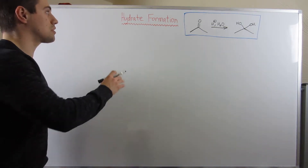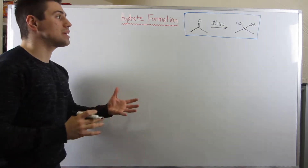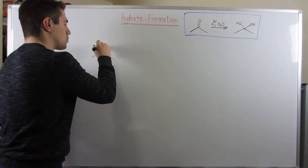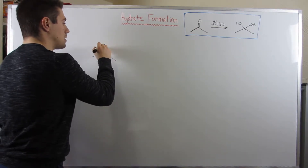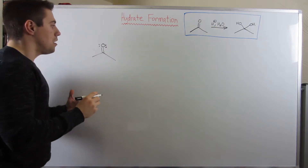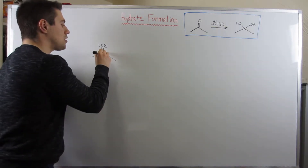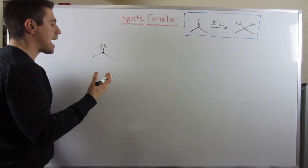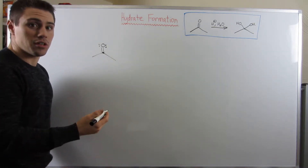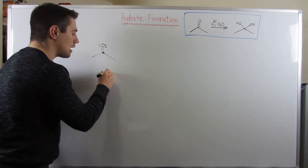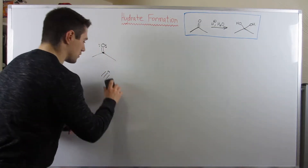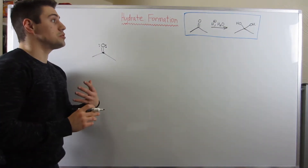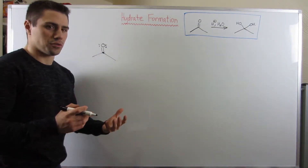So the first one we're going to talk about is called hydrate formation. Before we get into it, I want to highlight a few key things. In every single mechanism in this worksheet, we're going to do one thing and you're going to get so sick of doing it. If you look at our carbonyl carbon — I'm just drawing a 3-carbon ketone — we're used to attacking this carbonyl with things like Grignard nucleophiles or alkyne anions. However, in this unit, we're going to be using nucleophiles that are less reactive. They're called softer nucleophiles.